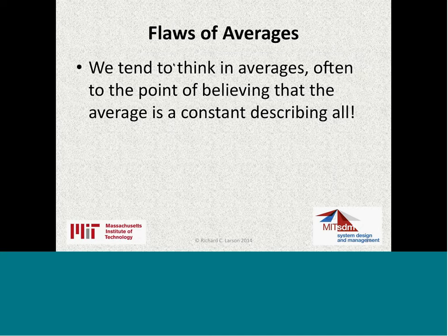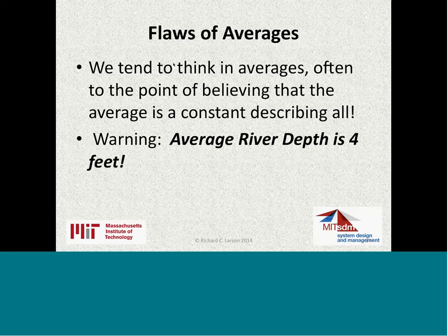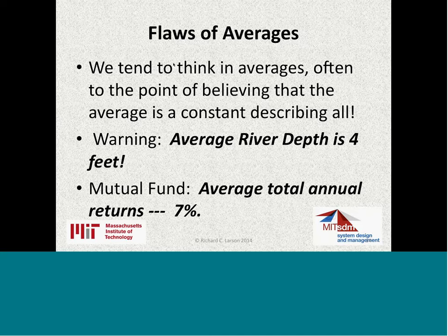When we think of averages, we think in terms of a constant describing them all. A mutual fund might advertise average annual returns of seven percent. But if you're a retiree requiring regular income, that average of seven percent might be minus 30 percent some years and plus 50 percent others. Is that what you really want? You have to think of distributions, not just averages.